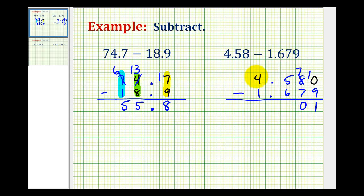Here we have to borrow, so we'll change the four to a three, which makes this fifteen, fifteen minus six is equal to nine. Bring down the decimal point, and we have three minus one, which is equal to two. Our difference is two and nine hundred one thousandths, or two point nine zero one.